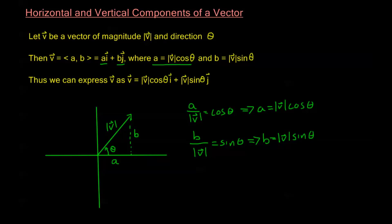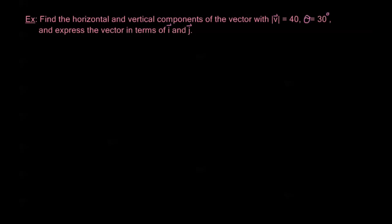So let's take a look at a couple of examples. The next video is where we'll get into really heavy examples using these component forms, but just to give us an idea of how to convert back and forth, let's look at a couple of examples here. Find the horizontal and vertical components of the vector with magnitude 40 and theta equals 30 degrees, and express the vector in terms of I and J.